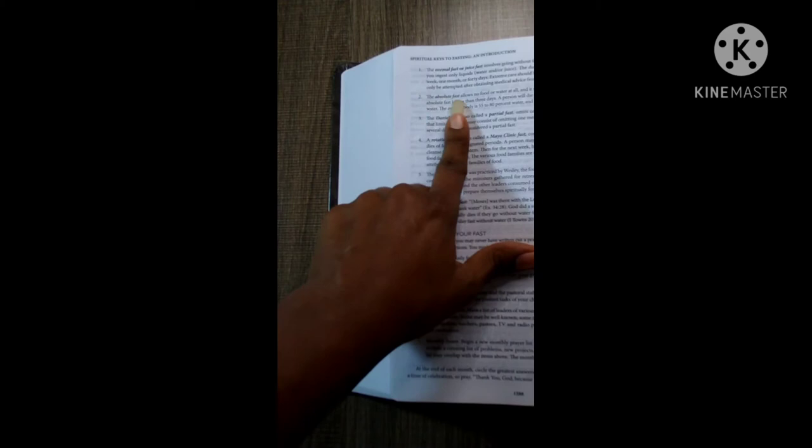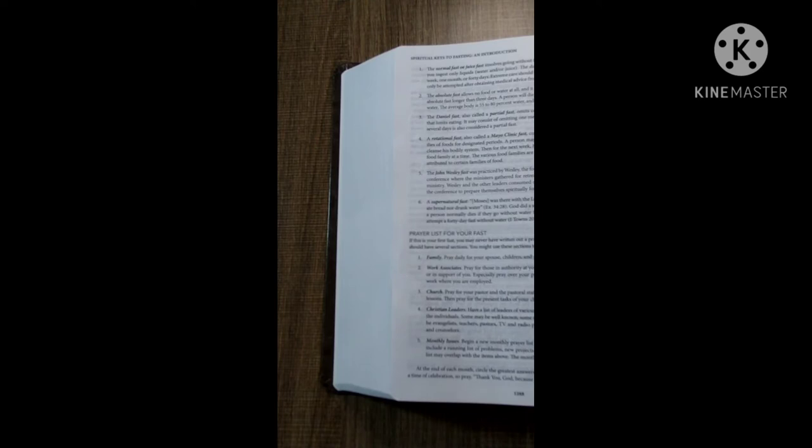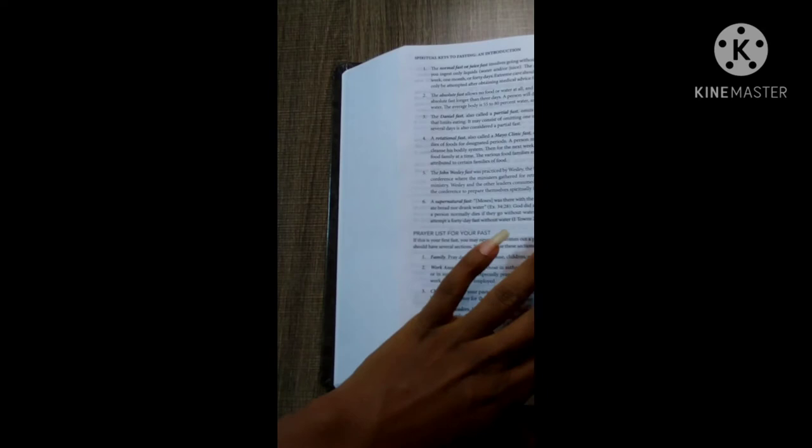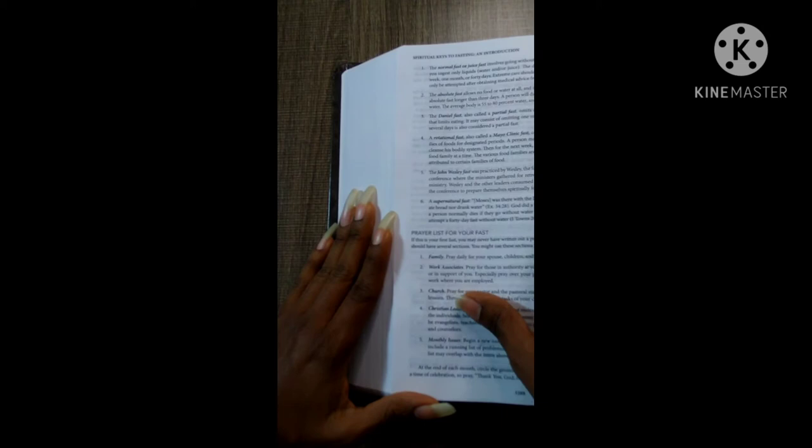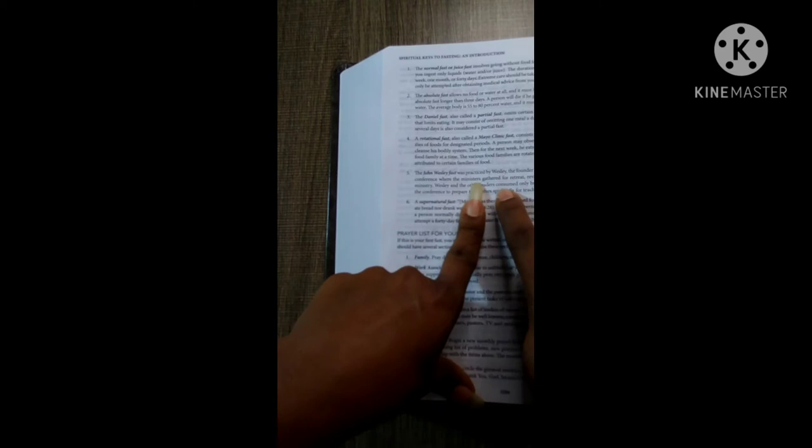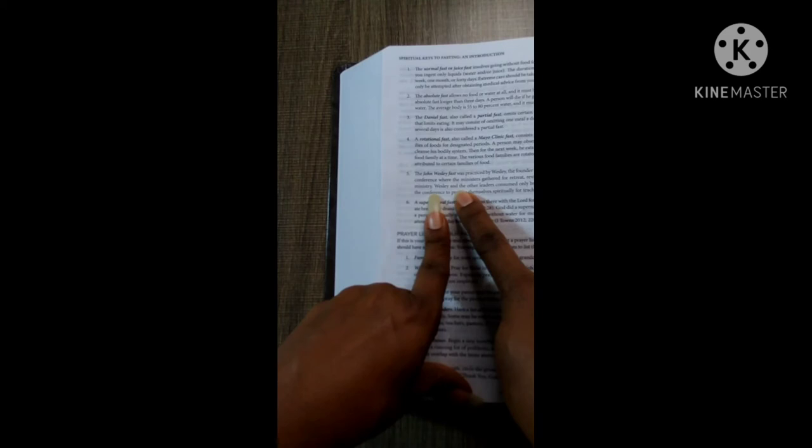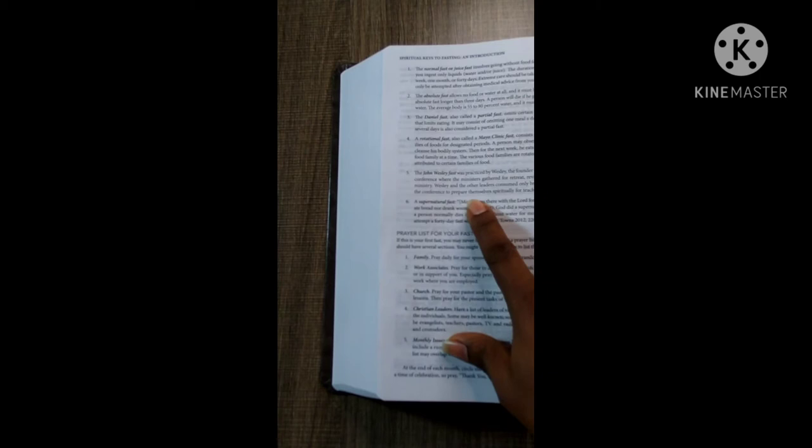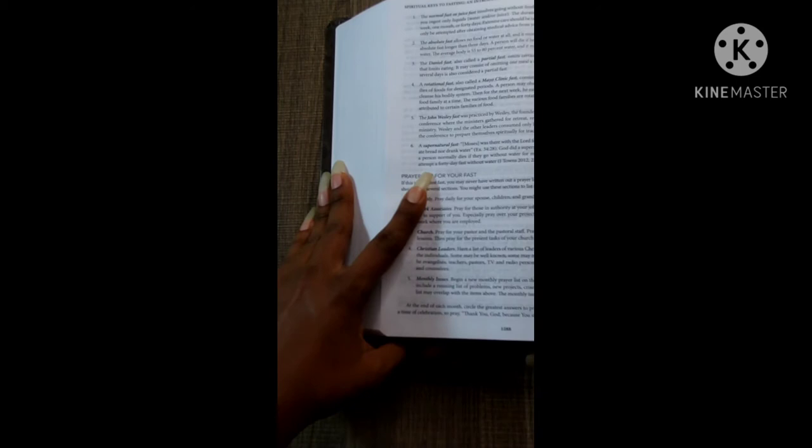Right here it talks about a normal fast or juice fast, gives you a little description. The absolute fast, which some people call that a dry fast. The Daniel fast, also called a partial fast. A rotational fast, also called a Mayo Clinic fast. John Wesley fast was practiced by Wesley, the founder of Methodist, prior to a Methodist conference where the ministers gathered for retreat, revival, and preparation for continual ministry. Wesley and the other leaders consumed only bread and water for 10 days prior to the conference to prepare themselves spiritually for teaching the pastors. And then, of course, the supernatural fast.